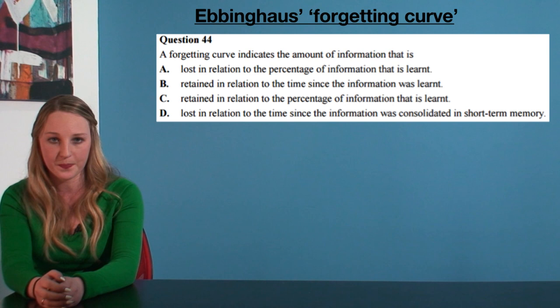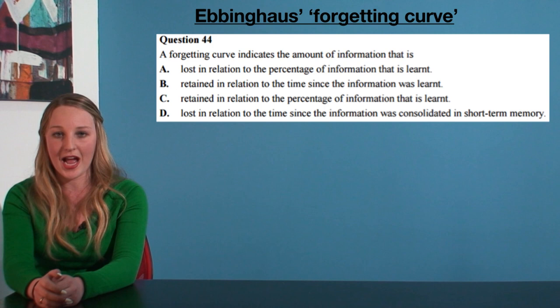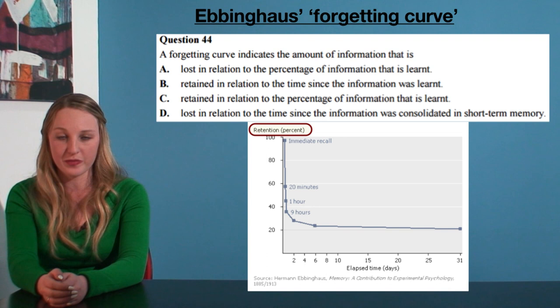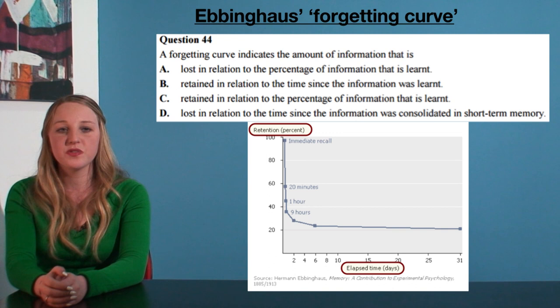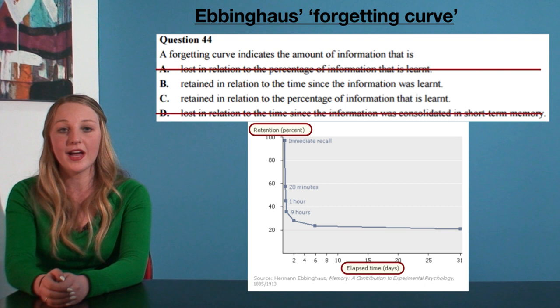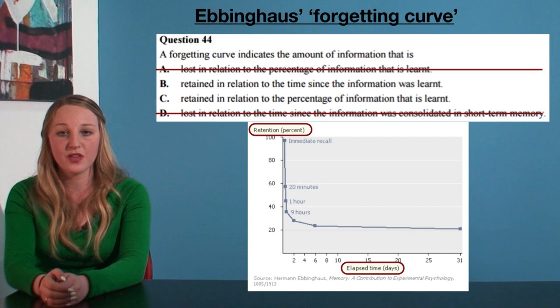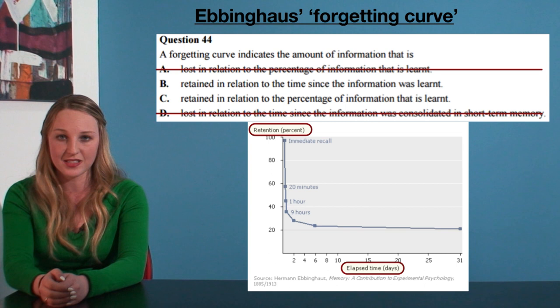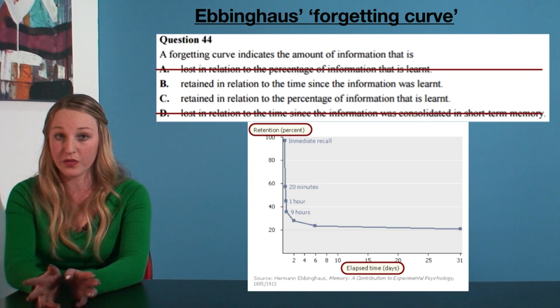Let's go through the options. Remember, here is Ebbinghaus' forgetting curve. The first thing we should look at is the axes. On the y-axis — the up and down one — we have level of retention measured in percentage of information learnt. And on the x-axis — the sideways one — we have the amount of time that has elapsed, measured in days. Just from this information, we can rule out options A and D. These two options both suggest that the forgetting curve measures how much information is lost. But despite its name as a forgetting curve, we can see that it actually measures how much information is retained. Of course, we can extrapolate how much information has been lost from the curve, but it does not directly measure it.